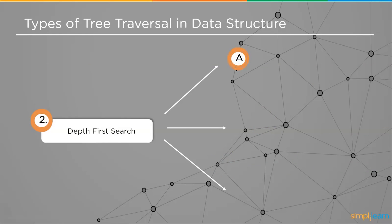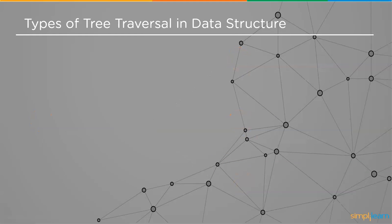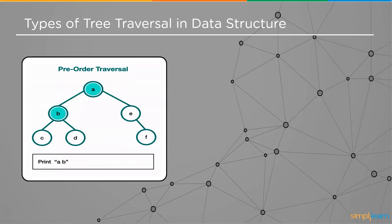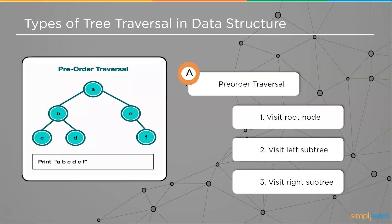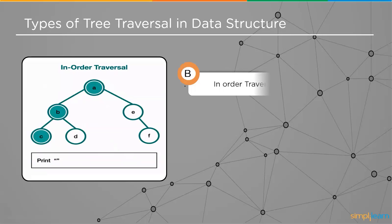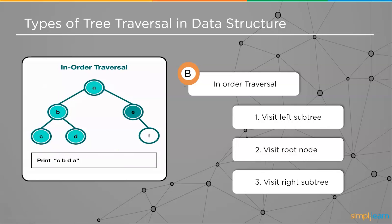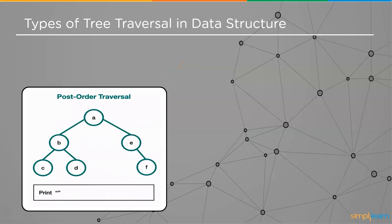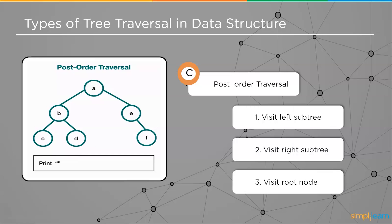In Depth First Search we traverse the tree in three ways: pre-order, in-order, and post-order traversal. In pre-order, we traverse the root node first, then the left subtree, and finally the right subtree. In in-order traversal, we traverse the left subtree first, then the root node, then the right subtree. In post-order traversal, we traverse the left subtree first, then the right subtree, and finally the root node.